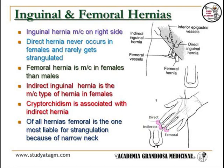Direct inguinal hernia originates medial to the inferior epigastric vessels through the triangle of Hesselbach. Direct hernia never occurs in females and rarely gets strangulated. Indirect inguinal hernia originates lateral to the inferior epigastric vessels, runs through the inguinal canal, and exits through the superficial ring. Indirect inguinal hernia is the most common type of hernia in females. Femoral hernia: both inguinal hernias originate above the inguinal ligament, but femoral hernia originates below the ligament through the deep femoral ring. Femoral hernia is more common in females than males and is most liable for strangulation because of its narrow neck.